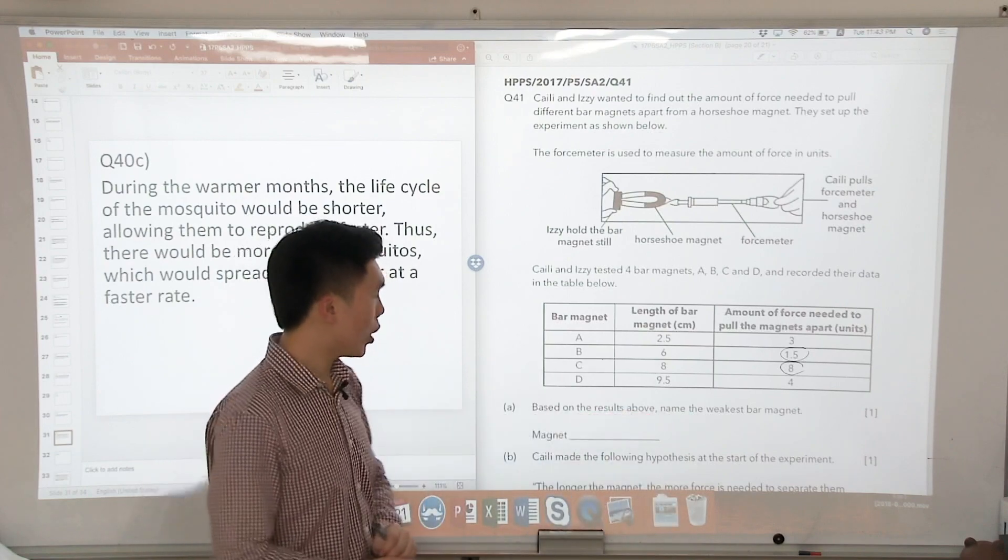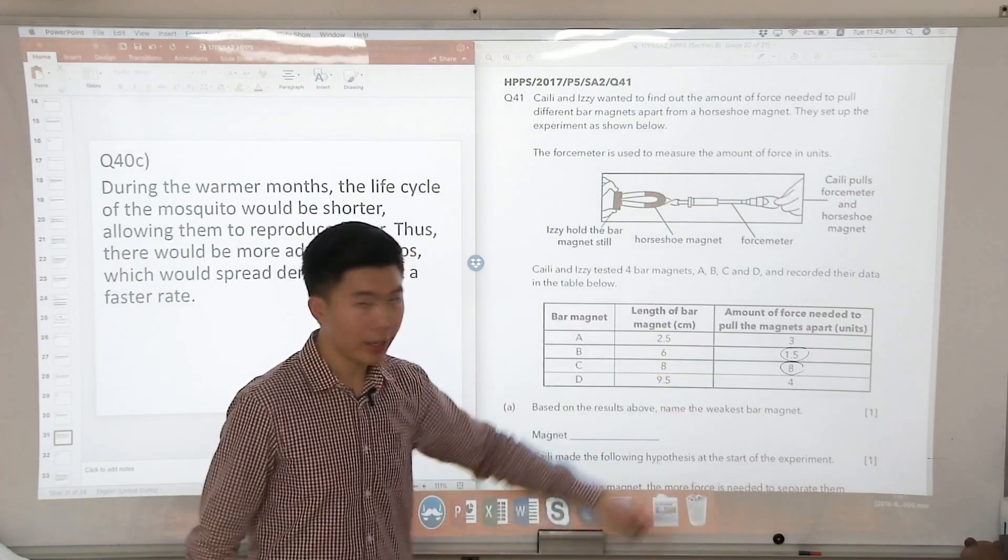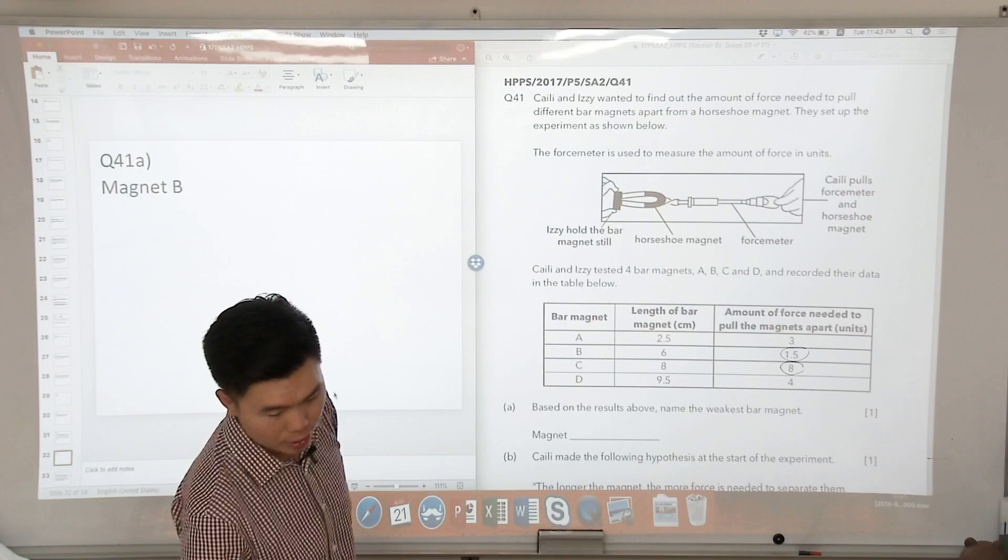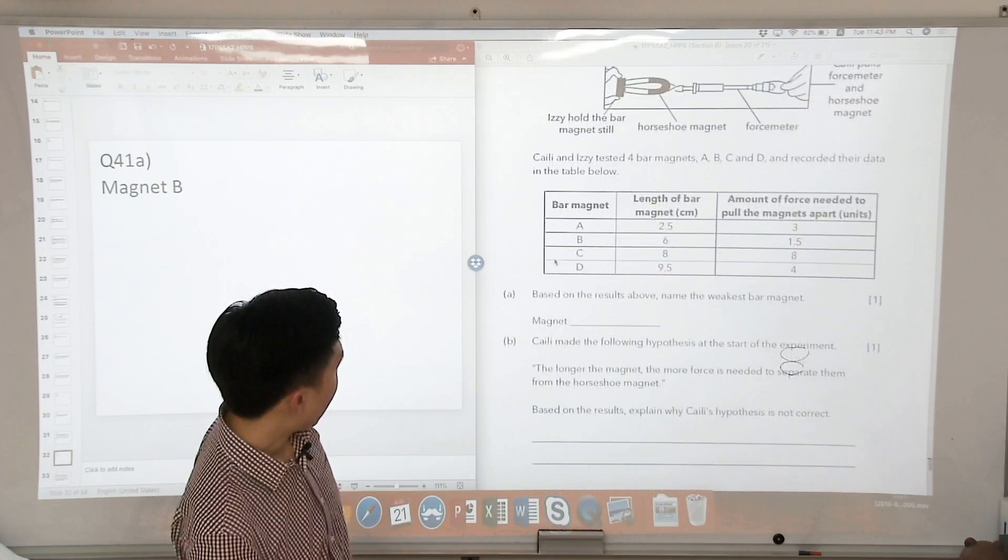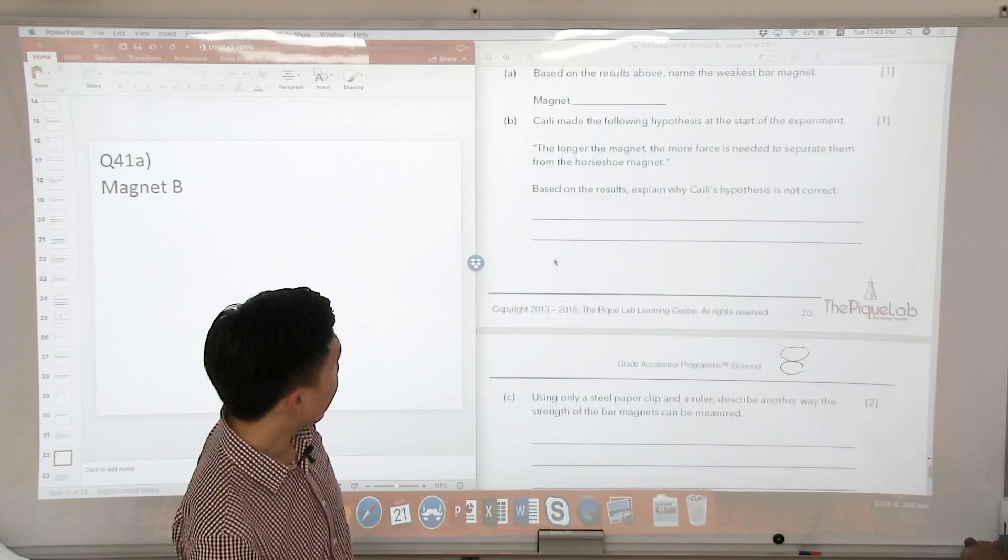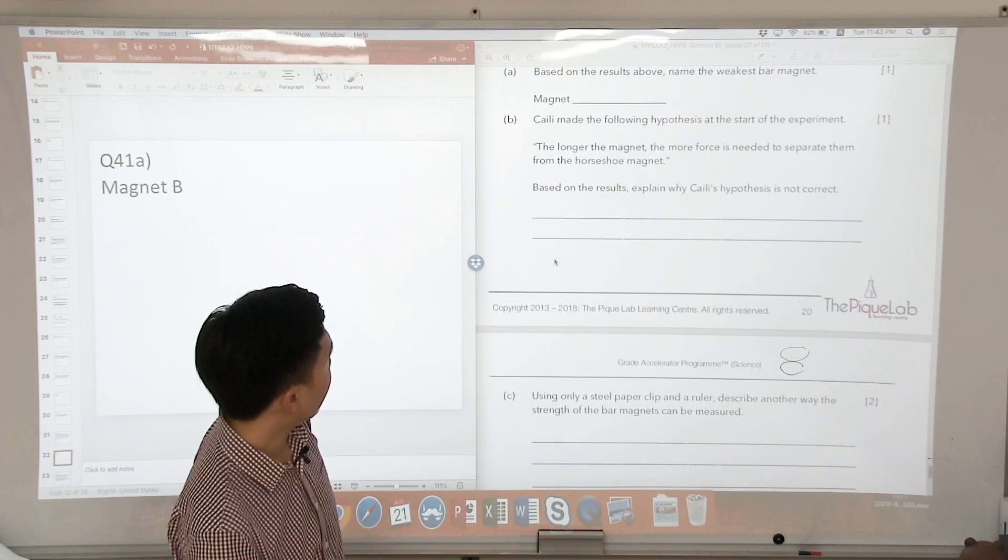So based on the results, name the weakest bar magnet. I will choose magnet B. So that's my answer for 41A. Looking at part B, Kylie made the following hypothesis at the start of the experiment.